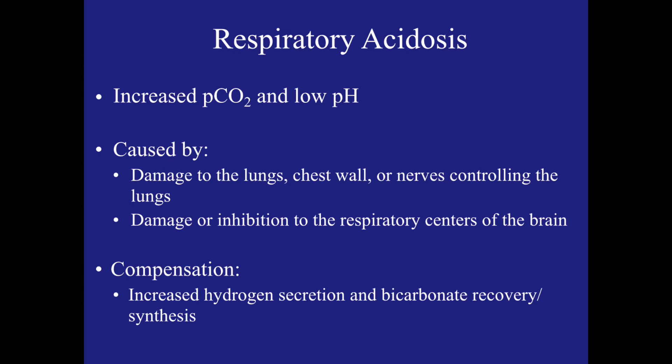Now let's talk about respiratory acidosis. This is caused by an increase of the partial pressure of CO2 of arterial blood to greater than 40 millimetres of mercury and to a pH of less than 7.37, due to accumulation of carbon dioxide. This is caused by damage to the lungs, chest wall, or nerves controlling the lungs, or damage to the respiratory centers of the brain, or inhibition of these centers by drugs or toxins such as sedatives or alcohol. The compensation for this is increased hydrogen secretion and bicarbonate recovery and synthesis by the kidney.